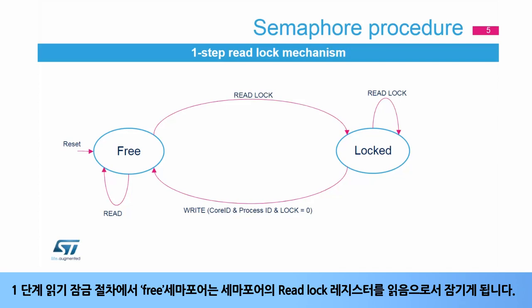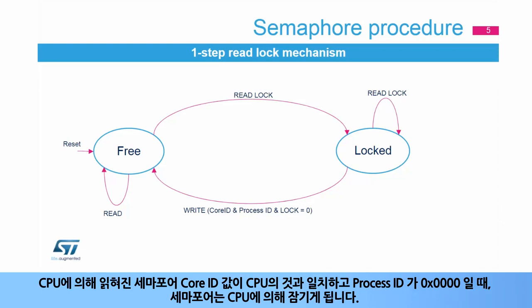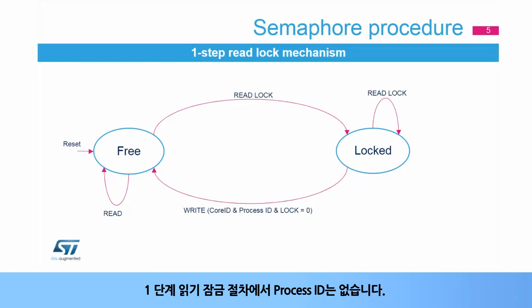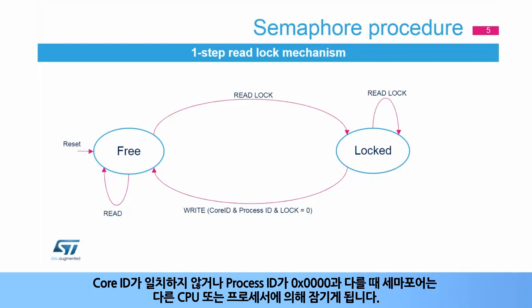In the one-step read-lock procedure, a free semaphore will be locked by reading the semaphore's read-lock register. The core ID used during the read will be stored in the semaphore during the read cycle. When the semaphore core ID value read by the CPU matches the one from the CPU and the process ID equals 0x0000, the semaphore is locked by the CPU. In the one-step read-lock procedure, there is no process ID; the process ID will read 0x0000. If the core ID doesn't match or the process ID is different from 0x0000, the semaphore has been locked by another CPU or process.